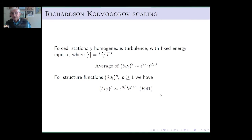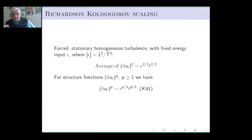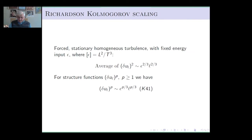From that we can derive the famous laws that Kolmogorov presented to us — in particular, the average of the square of the difference of velocity between two points separated by l should go with this two-thirds power. We're going to look at the structure functions delta-u to the p, and the K41 original paper of Kolmogorov would have us take this as proportional to l, this eddy size, to the p/3. So we're going to be looking at these exponents, this p/3.